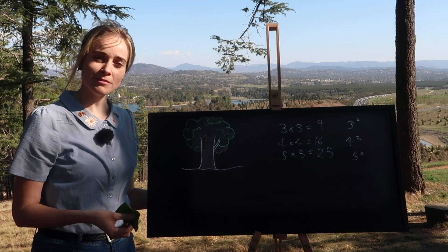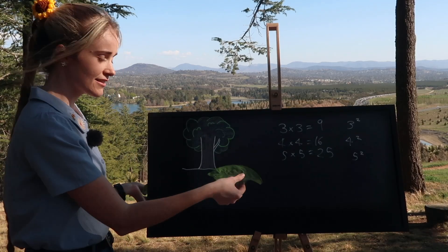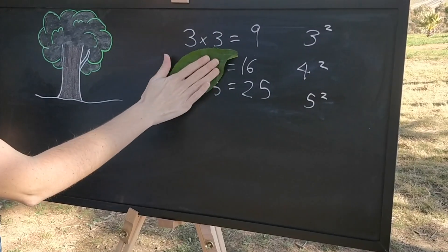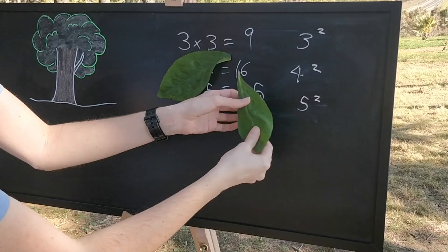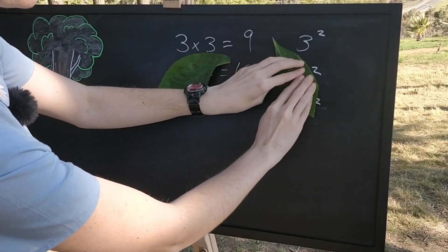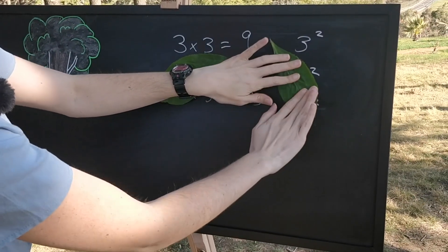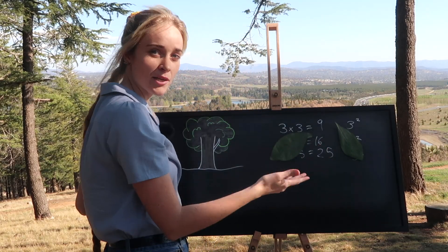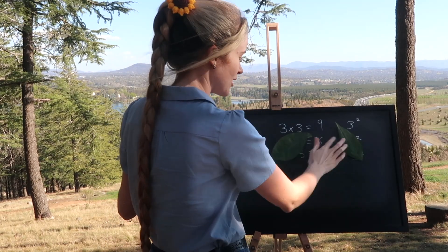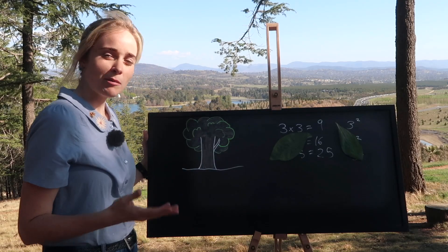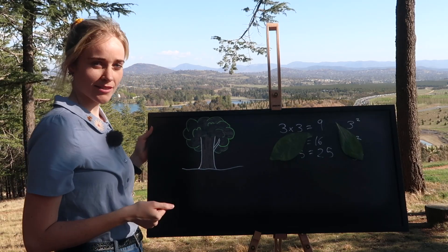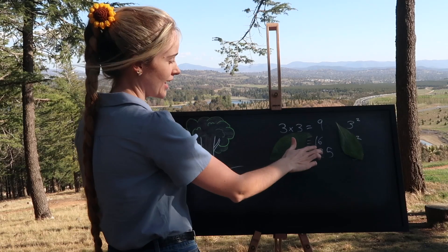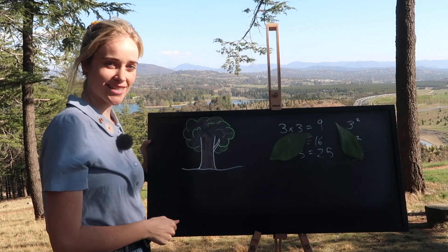But what if some leaves carried by the wind were to come across and land right here and right here, so that all we could see was the result. We knew that something squared was equal to 16 but we couldn't quite remember what. Well, what we would need to do would be to find the square root of 16.